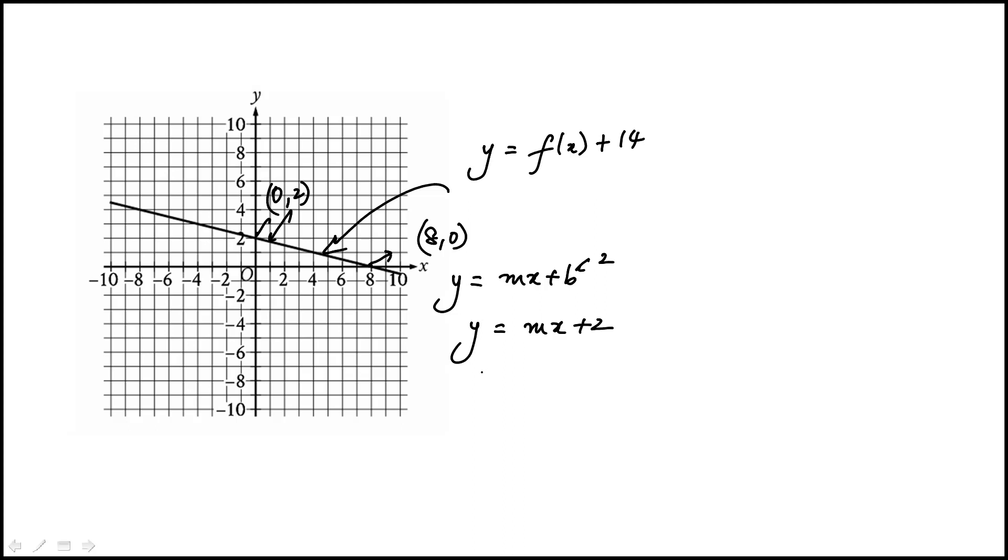So that means when x is 8, y is 0. So 8m is minus 2, m is minus 1 fourth.